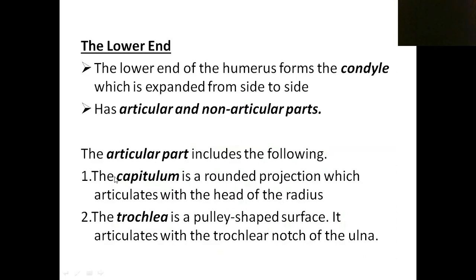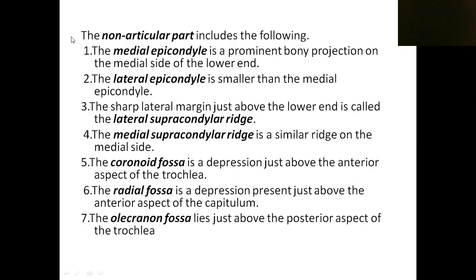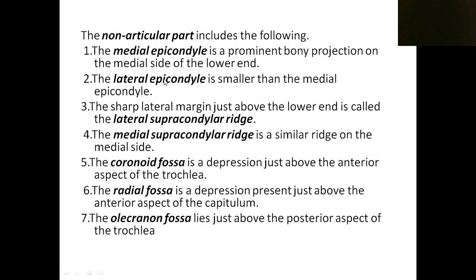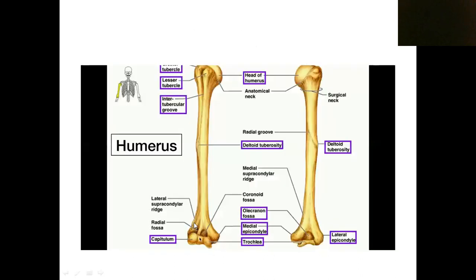The trochlea is a pulley-shaped structure that articulates with the trochlear notch of the ulna. The non-articular parts include the medial epicondyle and lateral epicondyle — projections on the medial and lateral sides respectively — and the lateral and medial supracondylar ridges above them.